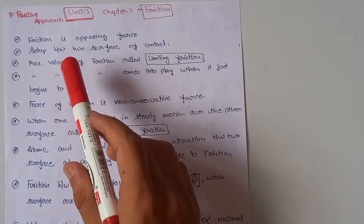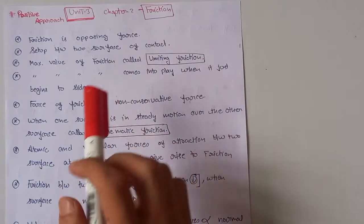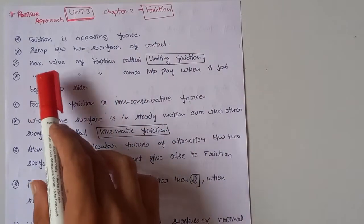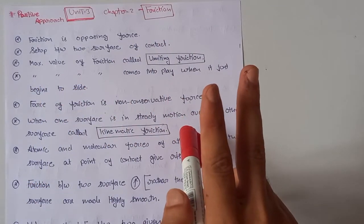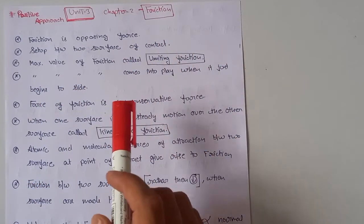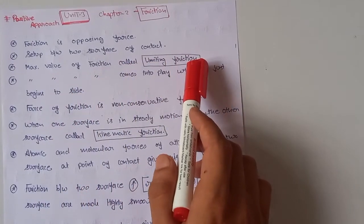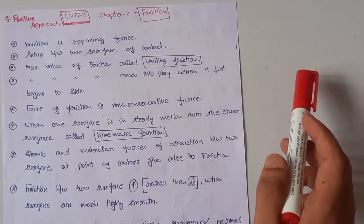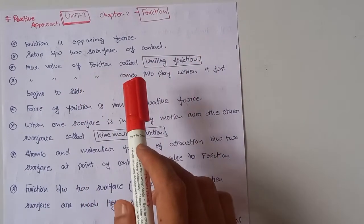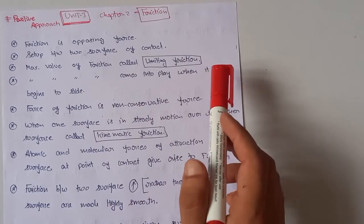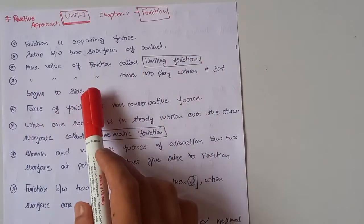Our first key point: friction is an opposing force and it acts between two surfaces in contact. The maximum value of friction is called limiting friction, also known as static friction.